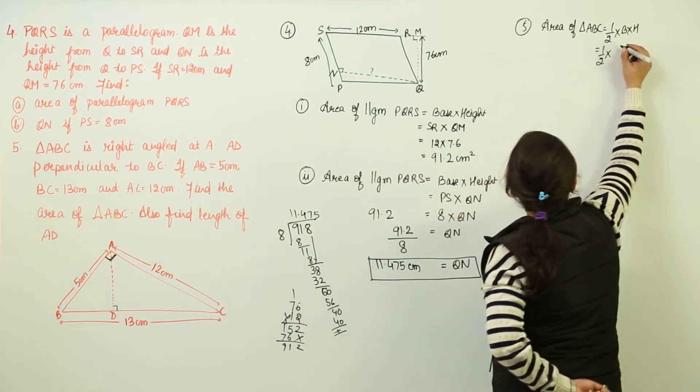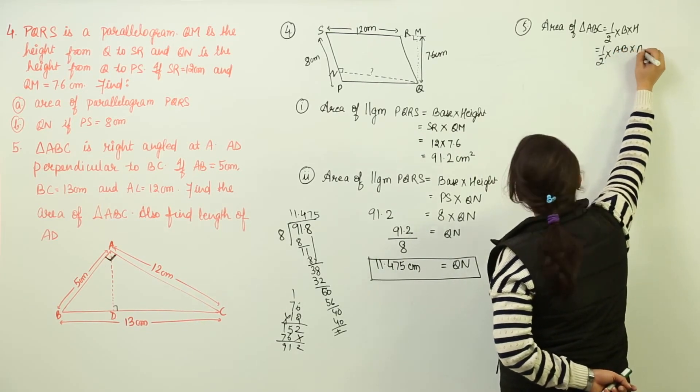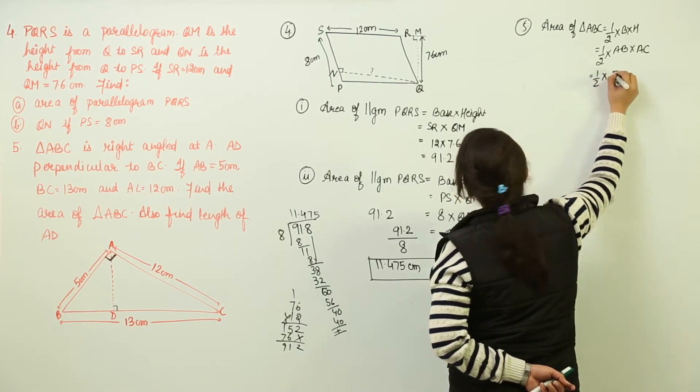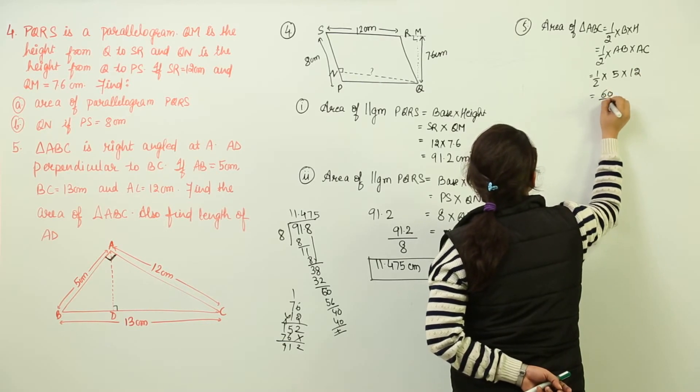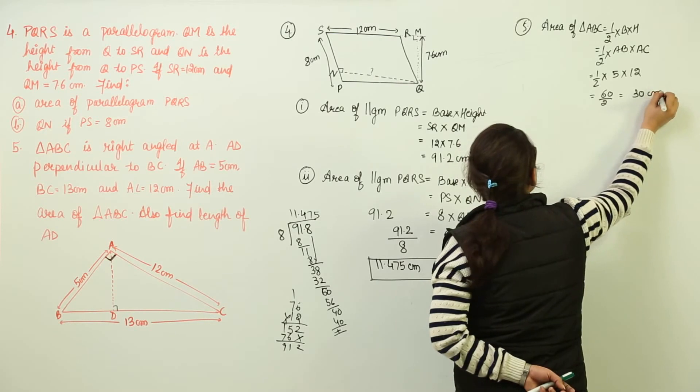So I can write here that the base AB is having height AC. So now we will put the values. AB is 5 and AC is 12. So we get 12 5s as 60 over 2 giving us 30 centimeters square.